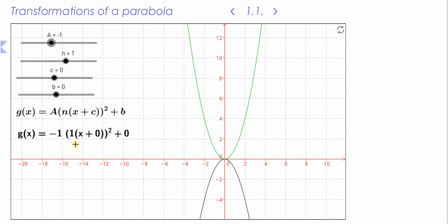So when a is negative, it's just a reflection of the graph if a were positive in the x-axis. Let's go back to that.